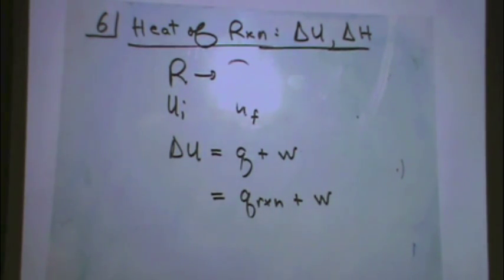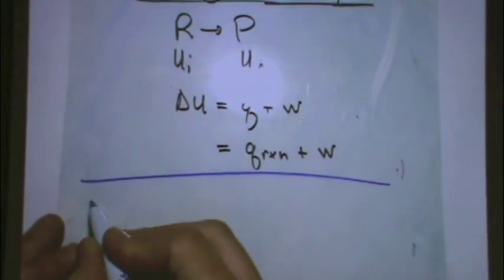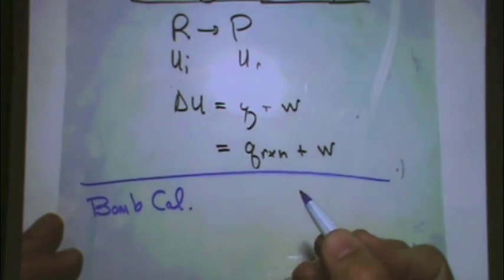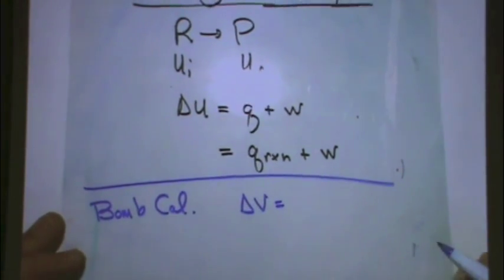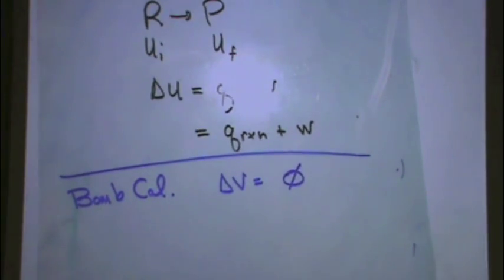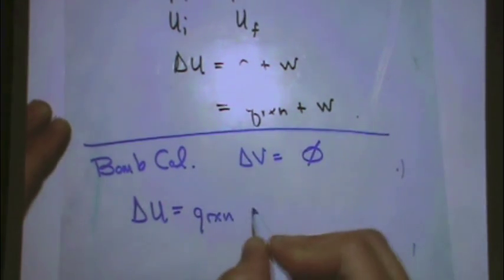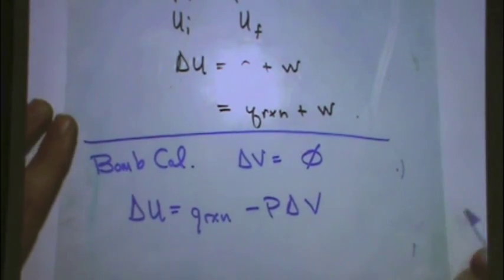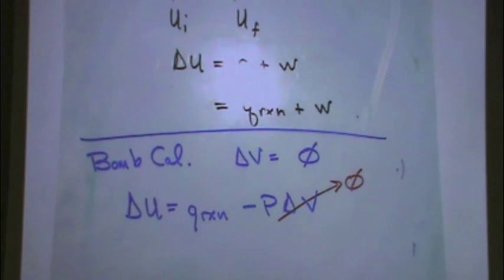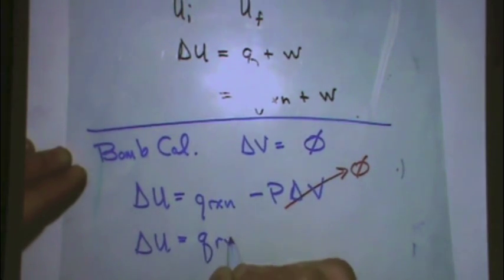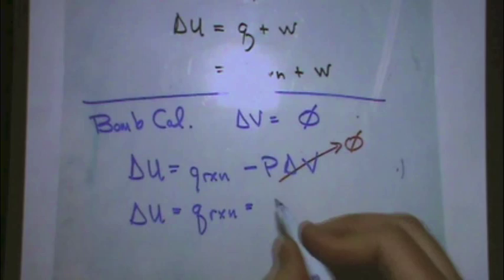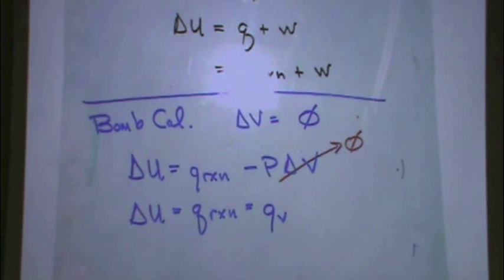Because this has to do with a reaction, I'm going to be more specific. I'll say Q_RXN plus W, because it's a heat of reaction. Now, we're going to do two separate things. First, in blue. Let's consider this example in a bomb calorimeter. Delta V equals what? In a bomb calorimeter. Zero. There's no change in volume for a bomb calorimeter. So, let's go back to our equation. Delta U equals Q reaction. And then work is minus P delta V. But, delta V is zero. So, in this case, delta U equals Q reaction. And just to define another term, because we really like to do that. We'll call this Q sub V, meaning heat at constant volume. Just remember, because Q reaction is more nebulous. If we're more specific, Q_V, we know this is Q at constant volume for this bomb calorimeter. So, that's interesting. Delta U equals Q_V.